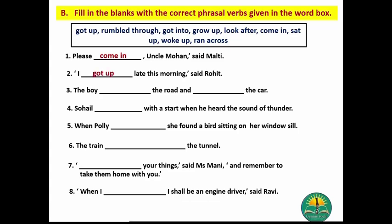Number two: 'I got off late this morning,' said Droid. Number three: The boy ran across the road and got into the car. Number four: Hill sat up with a start when he heard the sound of thunder. Number five: When Polly woke up, she found a bird sitting on her window sill. Number six: The train rumbled through the tunnel. Number seven: 'Look after your things,' said Miss Money, 'and remember to take them home with you.' Number eight: 'When I grow up, I shall be an...' — and we have filled the correct phrasal verbs from the word box.